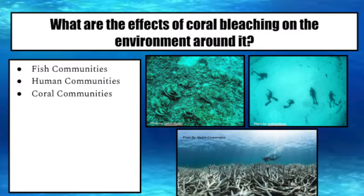Not only does coral bleaching affect marine life, but also life on the surface. Humans are heavily affected by the bleaching of coral in some surprising ways. Coral reefs act as a natural barrier for waves that may cause damage to communities along the coast. Without coral reefs, those seaside communities may have to rely on things like seawalls to help protect them. However, seawalls are expensive, not as effective, environmentally damaging, and not as visually appealing as coral reefs.